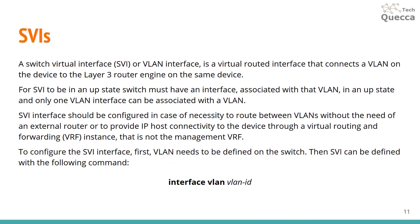SVIs: a Switch Virtual Interface is a virtual router interface that connects a VLAN on the device to the layer 3 routing engine on the same device. For an SVI to be in an up state, the switch must have an interface associated with that VLAN in an up state, and only one VLAN interface can be associated with each VLAN. SVIs should be configured when routing between VLANs is needed without an external router, or to provide IP host connectivity through a virtual routed and forwarded instance. To configure an SVI, first define the VLAN on the switch, then use the command: interface vlan [VLAN-ID], after which you can configure the IP address.